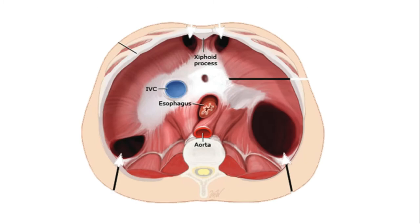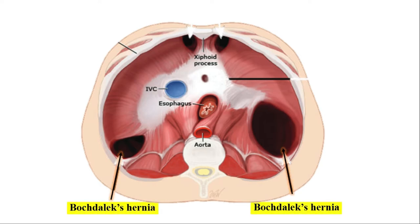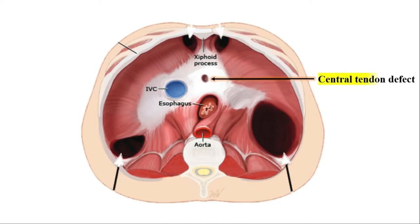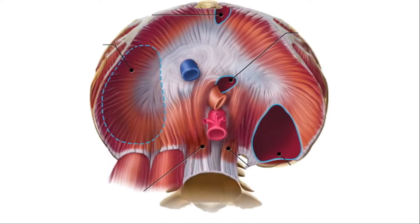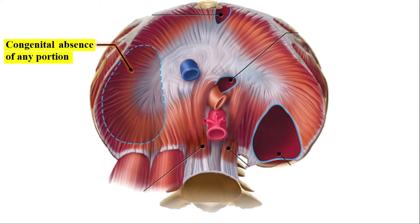There are several types of CDH. Among all of them, the Bochdalek hernia is the most common. Apart from Bochdalek hernia, we also have the Morgagni hernia, central tendon defect, diaphragm eventration, and any other portion of the diaphragm can be congenitally absent. In this video I'm going to focus more on Bochdalek hernia and Morgagni hernia, as the incidence of other types is very low.